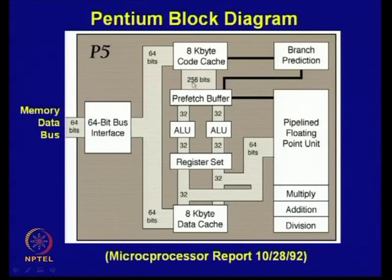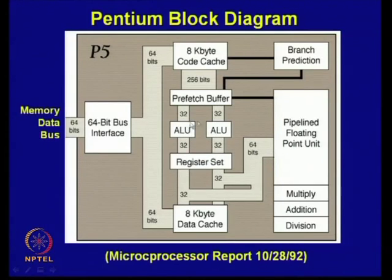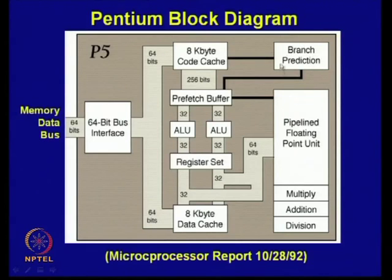The cache memory shows 8 KB of instruction cache and 8 KB of data cache. There are two ALUs, so it uses superscalar architecture. These are the register sets, the prefetch buffer where instructions are prefetched and stored, and a separate branch prediction unit built in. Multiplication and division are available in hardware, which were not available in earlier processors.